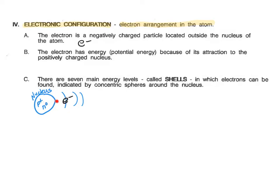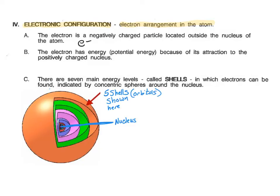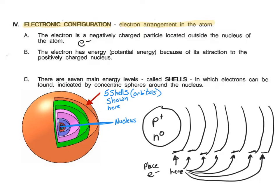There are seven main energy levels, we call them shells, in which the electrons can be found. These are going to be indicated by the concentric spheres around the nucleus. I'm only going to show a portion of the sphere as a parenthesis. That will be where we're going to place the electrons.